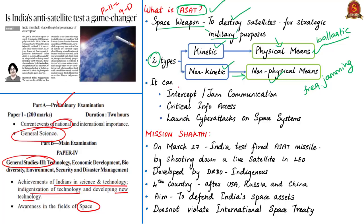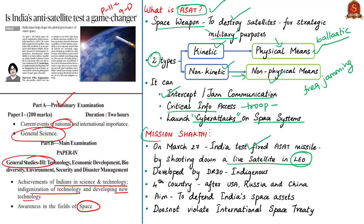An ASAT has three uses: first, it can intercept, jam communication, or military satellites of enemy countries; second, it can access critical information about troop movements or incoming missiles; third, it can launch cyber attacks on space systems and direct laser-based weapons. Recently, India successfully test-fired an anti-satellite missile by shooting down a live satellite in the low Earth orbit under the project named Mission Shakti. Mission Shakti was led by the Defence Research and Development Organisation and is aimed at strengthening India's overall security through indigenous development of ASAT technology, with many spin-offs for civilian commercial use.